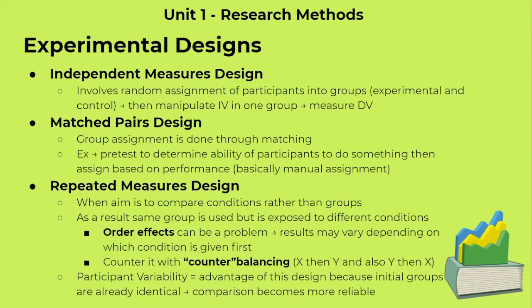Now let's talk about experimental designs. There are three main experimental designs. The first one is independent measures. This involves random assignment of participants into groups. We take our sample and randomly assign these people into either the experimental group or the control group. Then we manipulate the independent variable in the experimental group and leave the control group, and compare these two groups to measure our dependent variable.